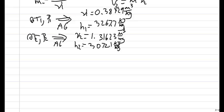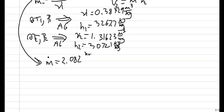Starting with the mass flow rate, using the equation with the given velocity, inlet area, and specific volume at state 1, we find the mass flow rate is 2.082 kilograms per second.